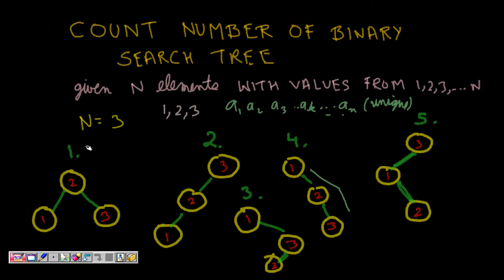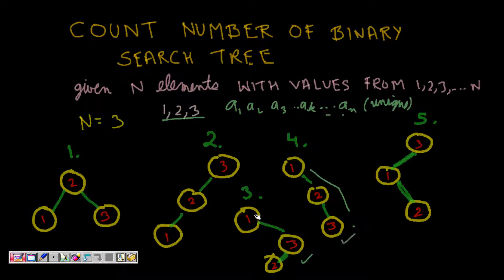Now let's take the example of three numbers: 1, 2, 3. I can have 1 as the root, then 2 as its right child and 3 as right child of 2. Or 1 as root, 3 as right child, and 2 as left child of 3. If node 2 is the root, that's the only possible BST. If node 3 is the root, we get: 3 with 2 and 1 going left-left, or 3 with 1 and 2 as left and right. So there are 5 possible binary search trees.